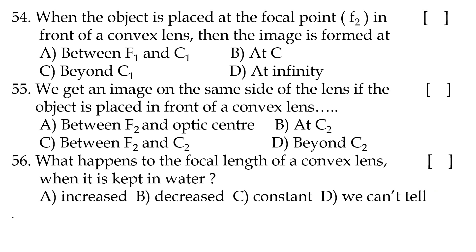Fifty-fourth question: when the object is placed at the focal point F2 in front of the convex lens, the image is formed at infinity. Fifty-fifth question: we get an image on the same side of the lens if the object is placed in front of a convex lens — option A, between F2 and optic center. Fifty-sixth question: what happens to the focal length of a convex lens when kept in water? Option A, it increases.